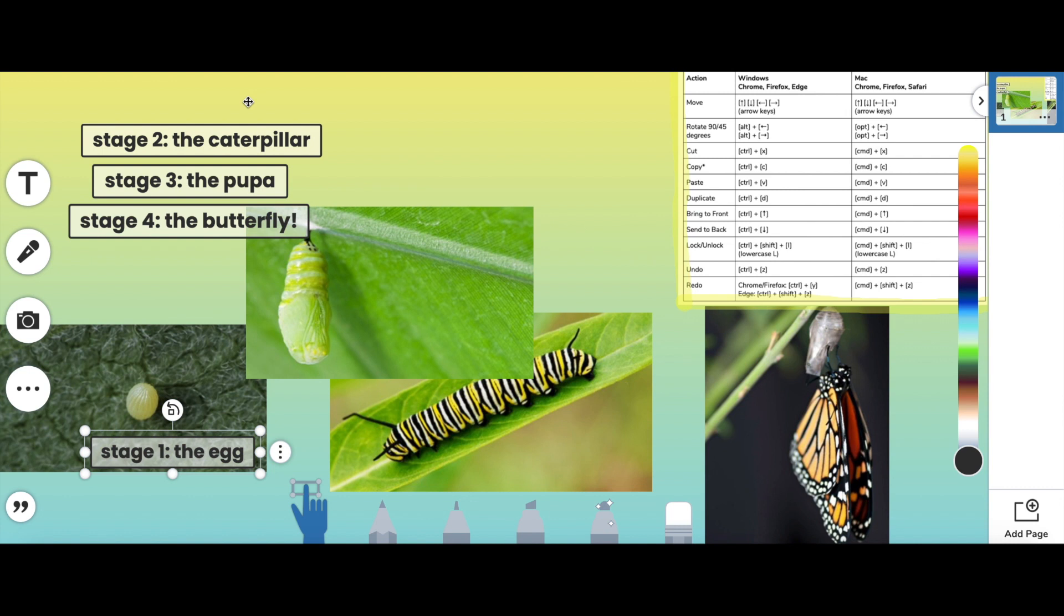You'll notice there are lots of different things that I can do according to these keyboard shortcuts. Let's say I want to duplicate this label. All I do is click Command D and there I go. I have another one that I can move around.